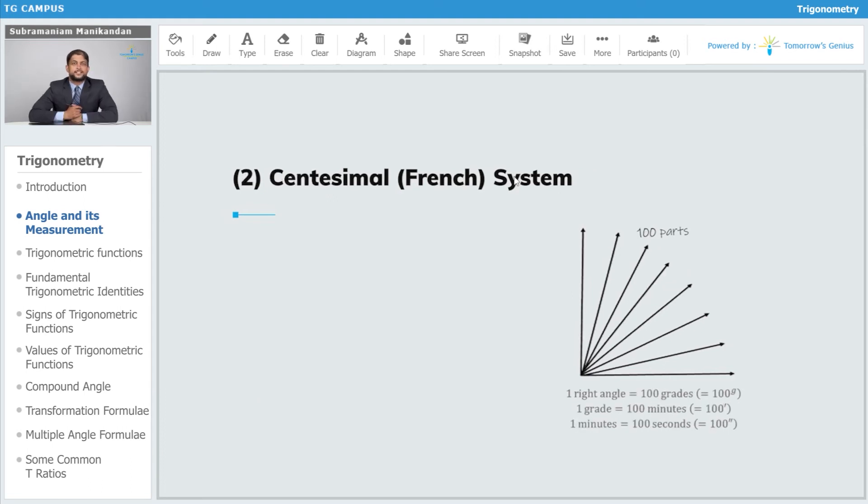The second system of angle measurement is called the French system, commonly, or more formally the centesimal system. Why is that? Because one rotation of the initial ray or the initial arm here is divided into 400 equal parts, so that one right angle contains 100 of these parts. Each of these parts is called grades, so one right angle is equal to 100 grades, and it is denoted as 100 superscript g.